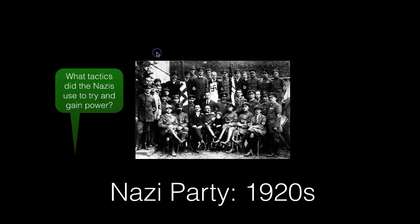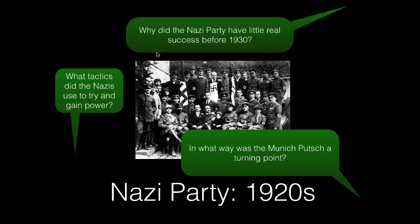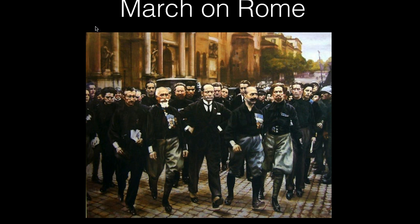We're going to look at the Nazi party in the 1920s, and there are three main questions: what tactics did the Nazis use to try and gain power? You'll see those tactics change - initially about a violent takeover, a coup or putsch, and after the failure of that putsch they change tactics. In what ways was the Munich Putsch of 1923 a turning point? And why did the Nazi party have little real electoral success before 1930? Their membership and organization increases, but they do not win in elections - their electoral fortunes actually decline.